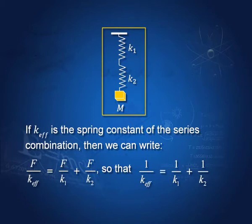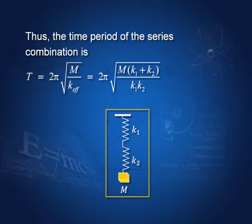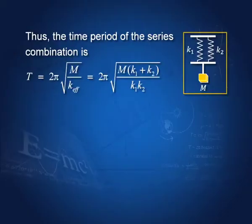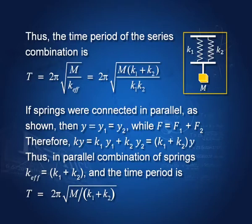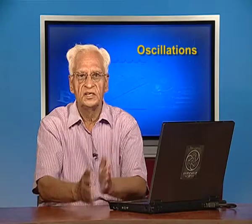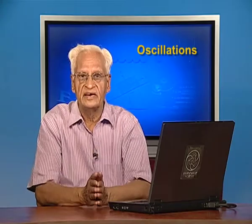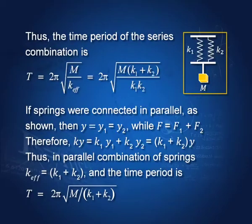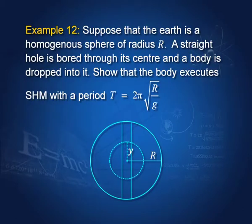Substituting the values, the time period in the series case is T = 2π√(m(k1+k2)/(k1·k2)). The same two springs can also be arranged in parallel, and we have already seen that in a parallel arrangement the effective spring constant is k1 + k2, giving a time period of T = 2π√(m/(k1+k2)).